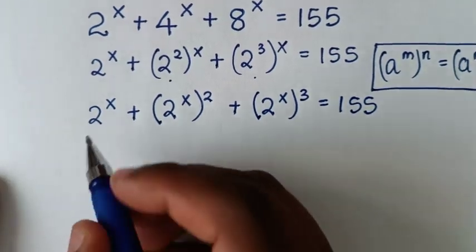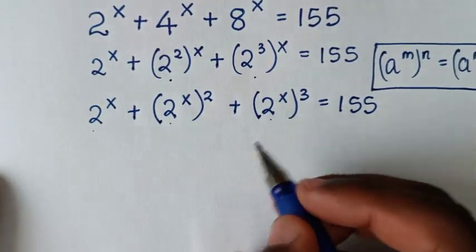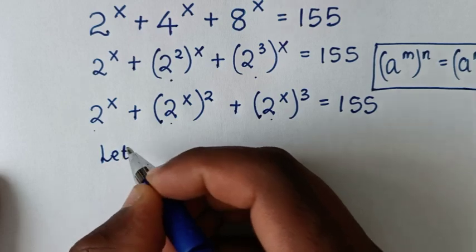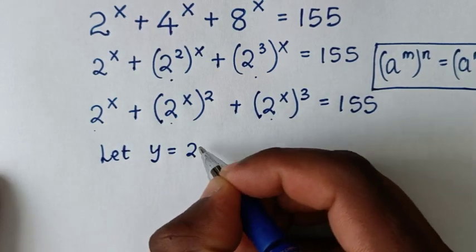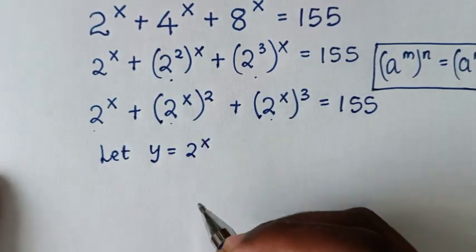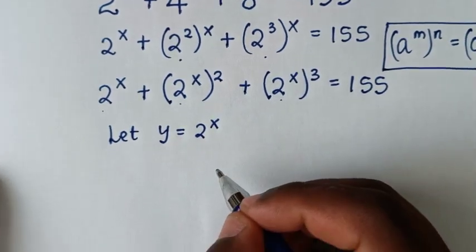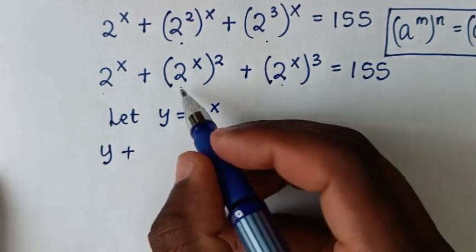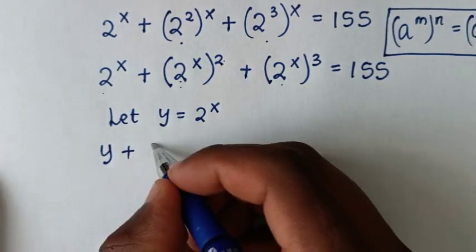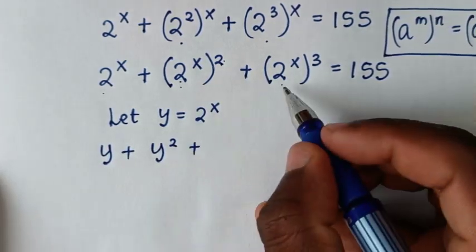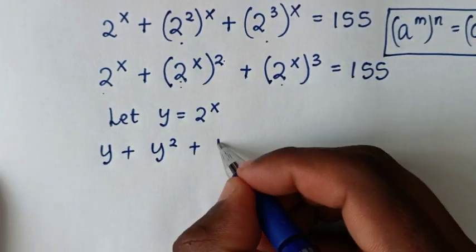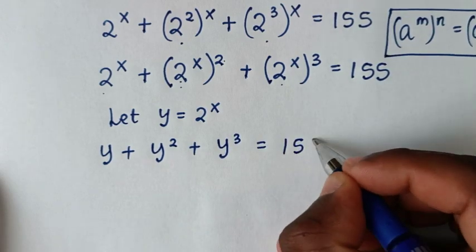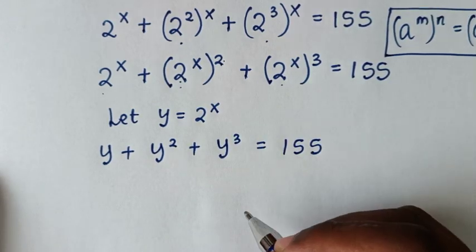Now, in this step, 2^x is common in all terms. So we let y equal to 2^x. Then our equation becomes y plus y squared plus y cubed is equal to 155.